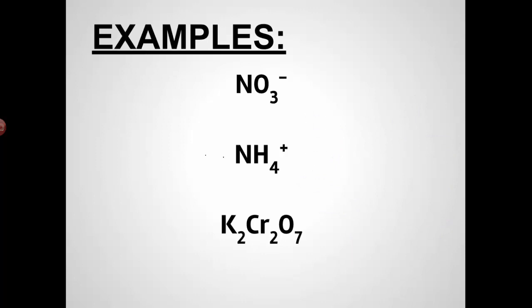NO3-, the nitrate ion. You should have ended up with N with plus five oxidation state and O with minus two. So how did we get that? Well, oxygen is always minus two unless it's a peroxide. That's not a peroxide. There are three of those, so that's minus six. So the minus six from the three oxygens and whatever nitrogen is together have to equal minus one. That means that nitrogen has to be plus five because if you add plus five and minus six, you get minus one.